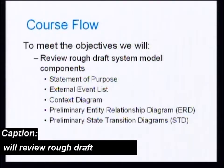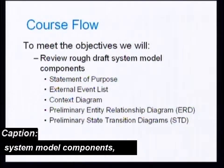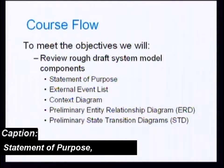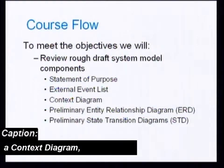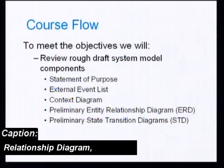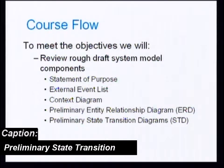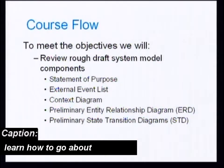We will review rough draft system model components, which include the statement of purpose, an external event list, a context diagram, a preliminary entity relationship diagram, and one or more preliminary state transition diagrams. And, of course, we will also learn how to go about creating these constructs.